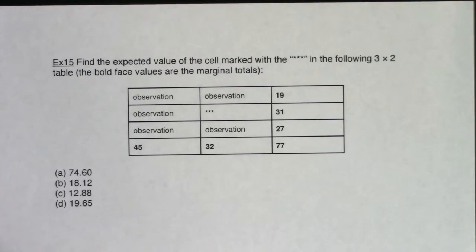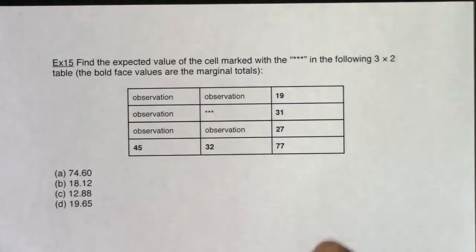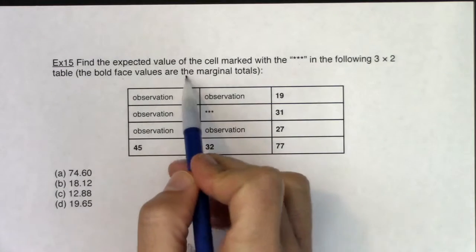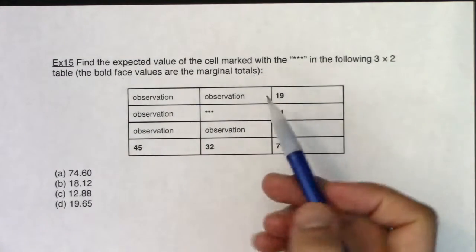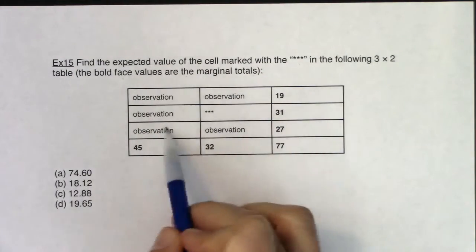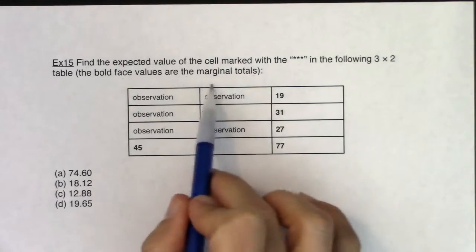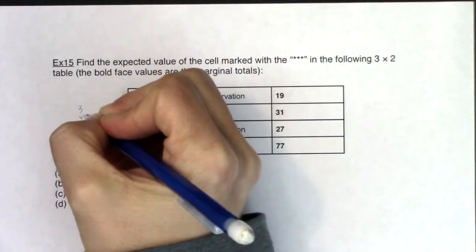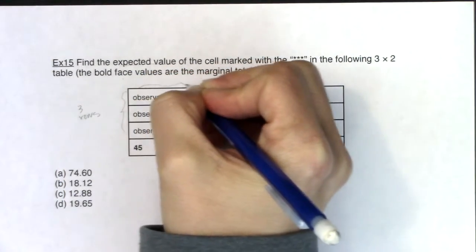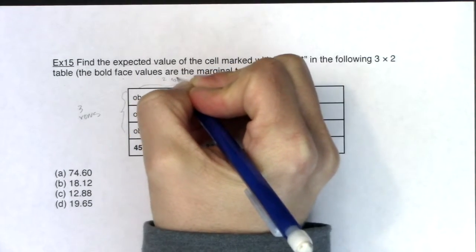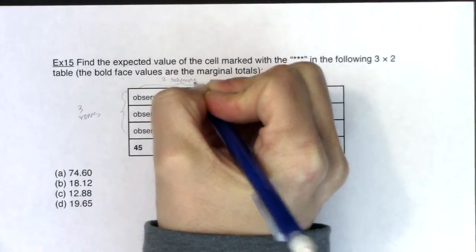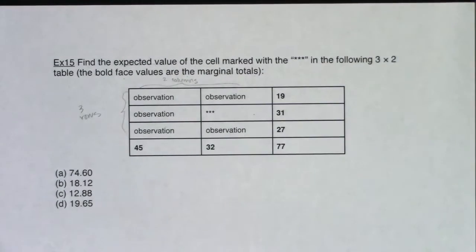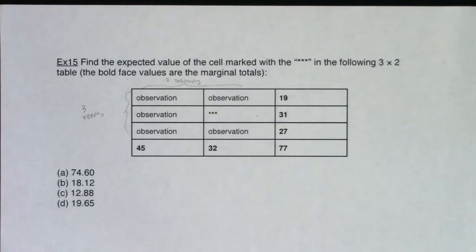Alright, so example 15, find the expected value of the cell marked with these three stars in the following three by two table. The boldface values are the marginal totals. So it looks like I have some observed data. I don't know what my variables are. I didn't give you any context, but it looks like I basically have three rows, and then we have two columns, hence the three by two. And I would like the expected value coming off of that cell. That's what I'm being asked to find. What is that expected value?